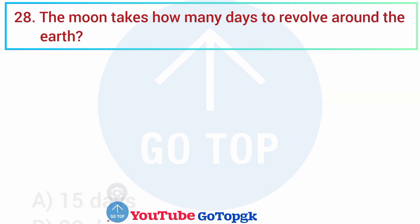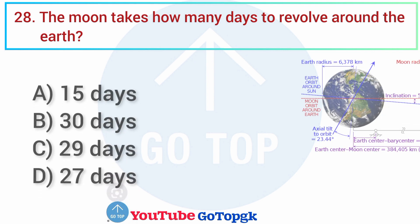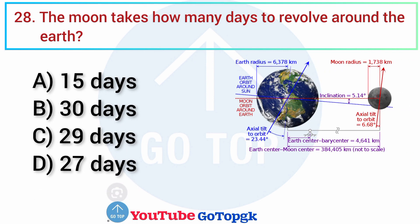Question No. 28. The moon takes how many days to revolve around the earth? Options: A. 15 days, B. 30 days, C. 29 days, D. 27 days. Your correct answer is option D: 27 days.